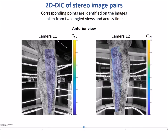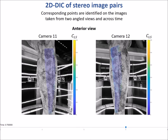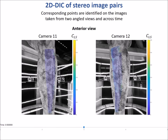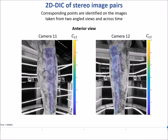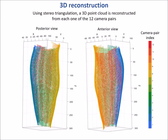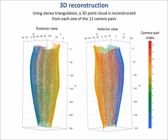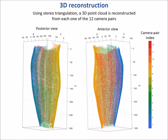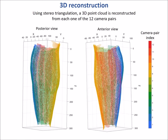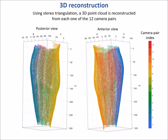This figure shows the same point matching procedure for another camera pair positioned anterior to the leg. Using stereo triangulation, these matched points on pairs of stereo images can be used to reconstruct the 3D positions of the points in a global coordinate system.